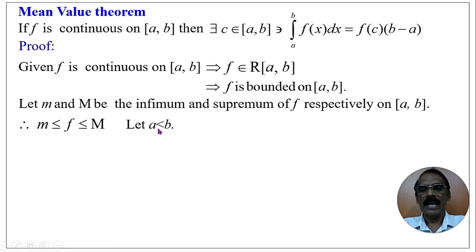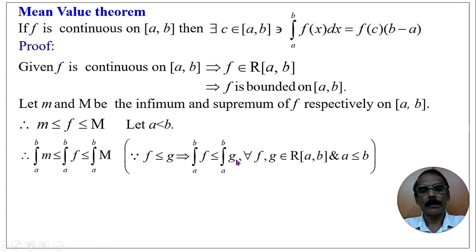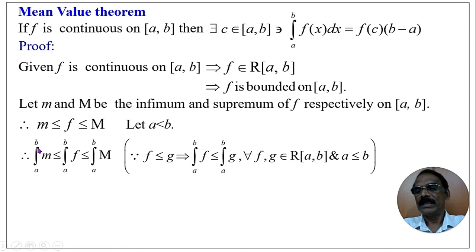Let us consider a less than b. We know that if f ≤ g, where f and g are Riemann integrable on [a, b] and a ≤ b, then the integral from a to b of f is less than or equal to the integral from a to b of g. This is one of the properties of integrals. Since m ≤ f ≤ M, when we take the integral, we get: integral from a to b of m ≤ integral from a to b of f ≤ integral from a to b of M.